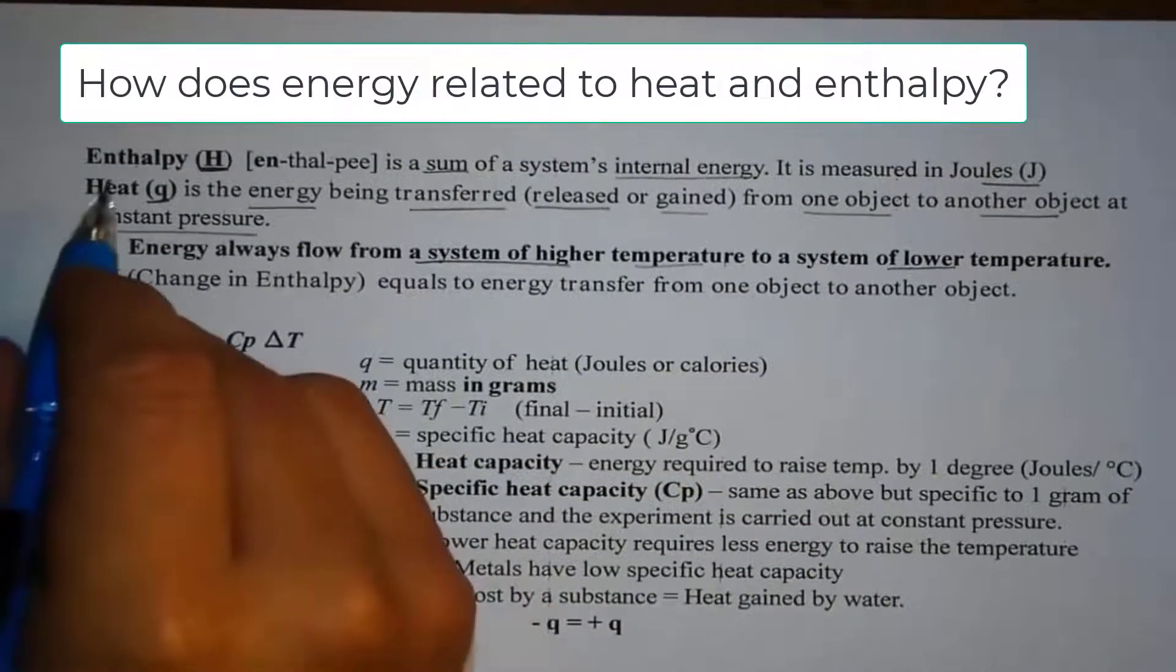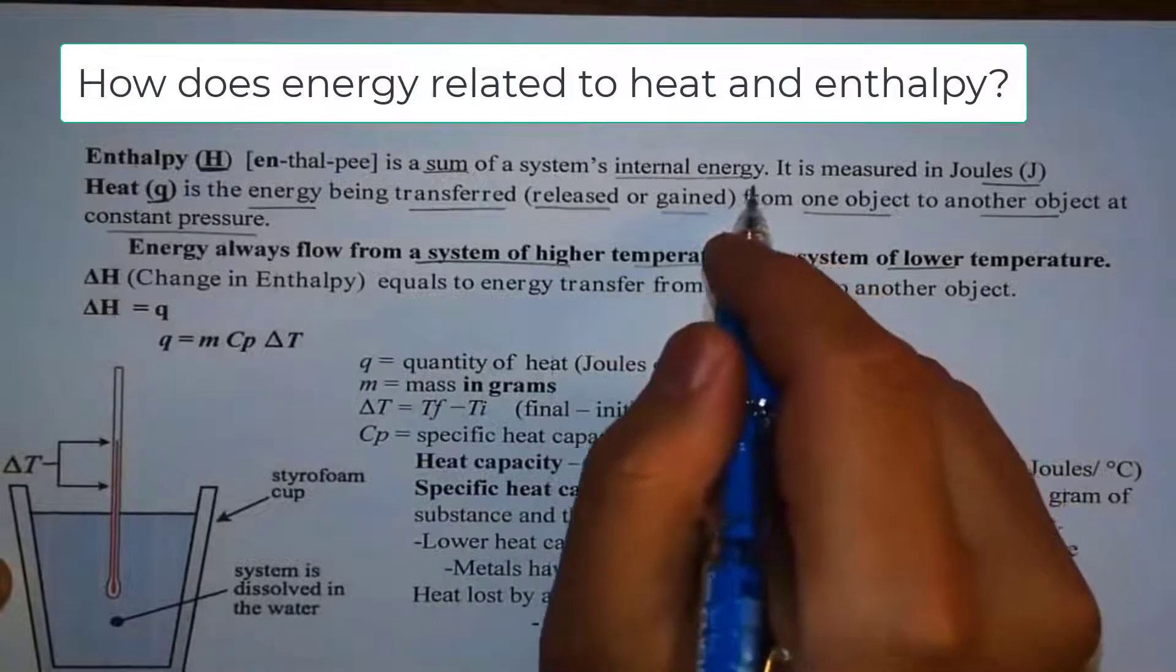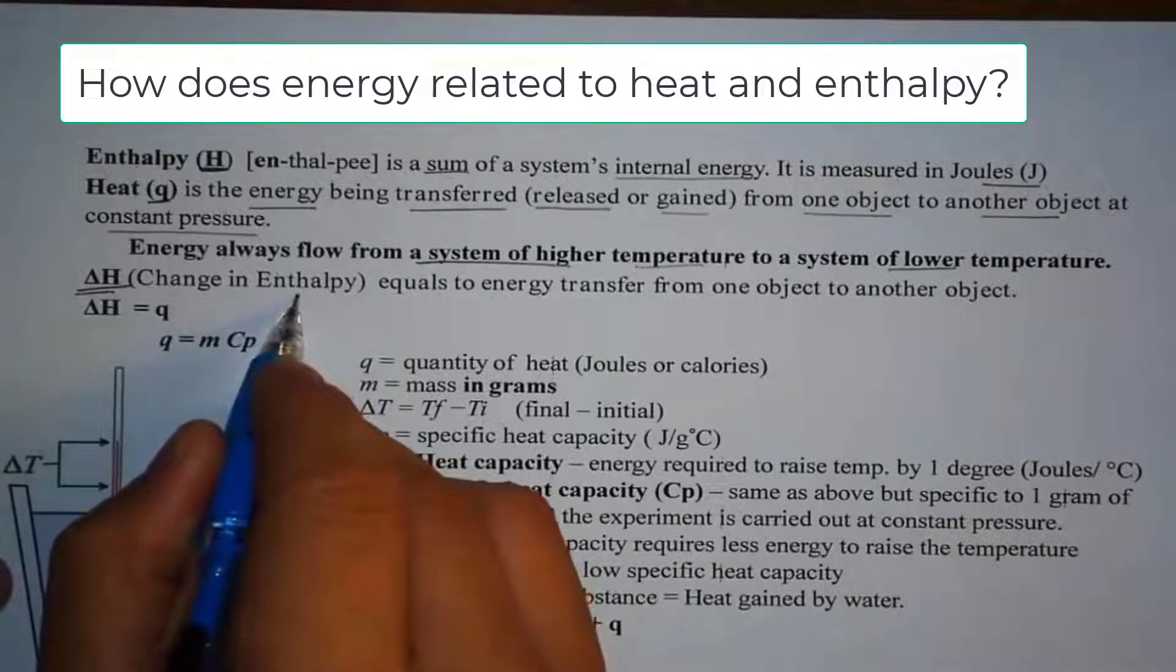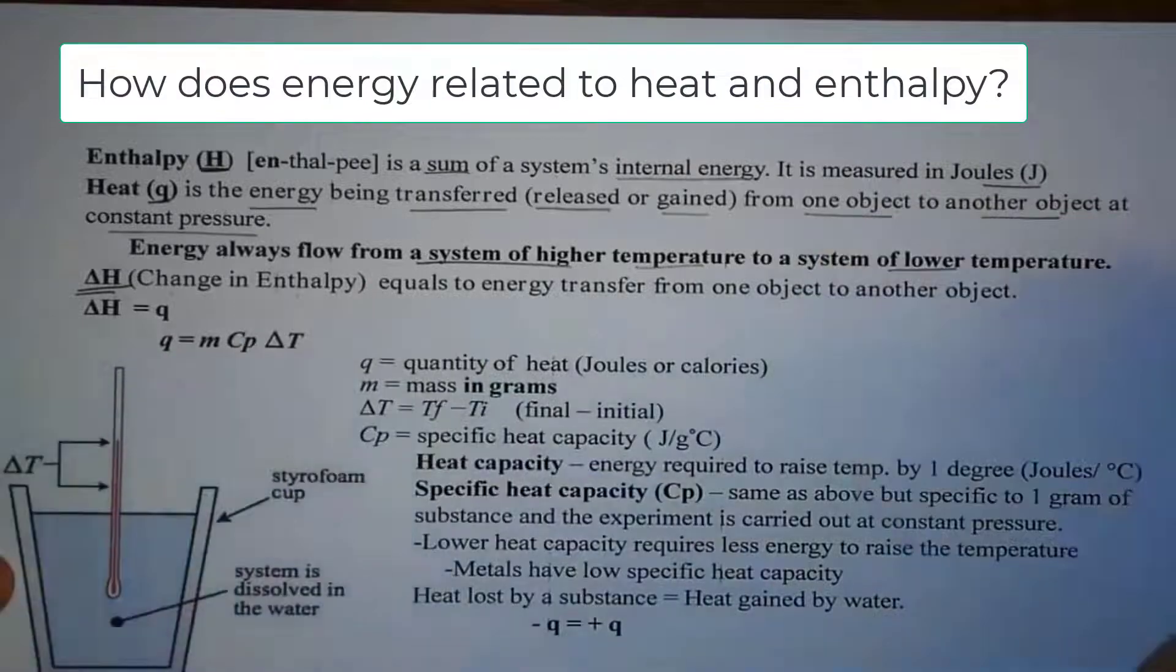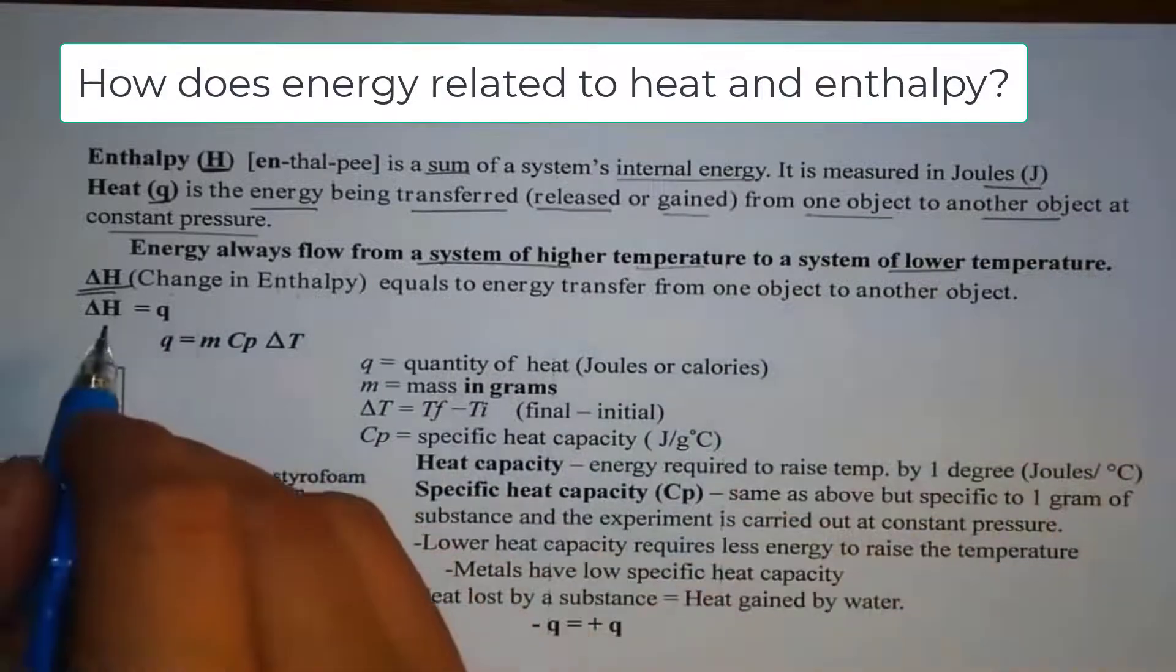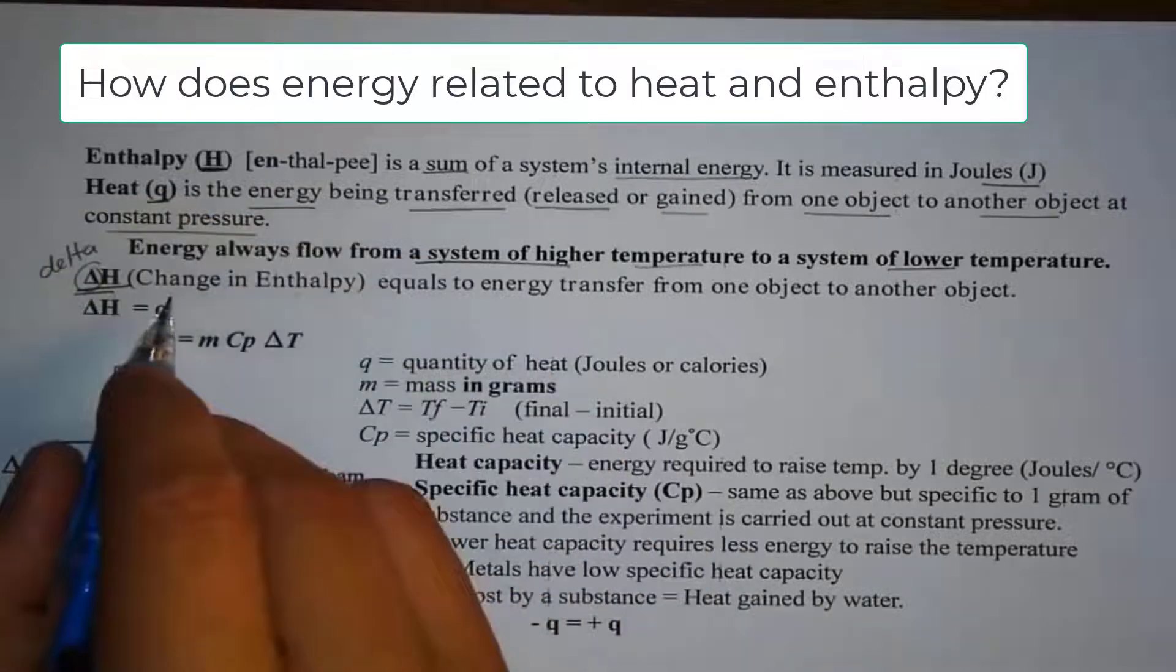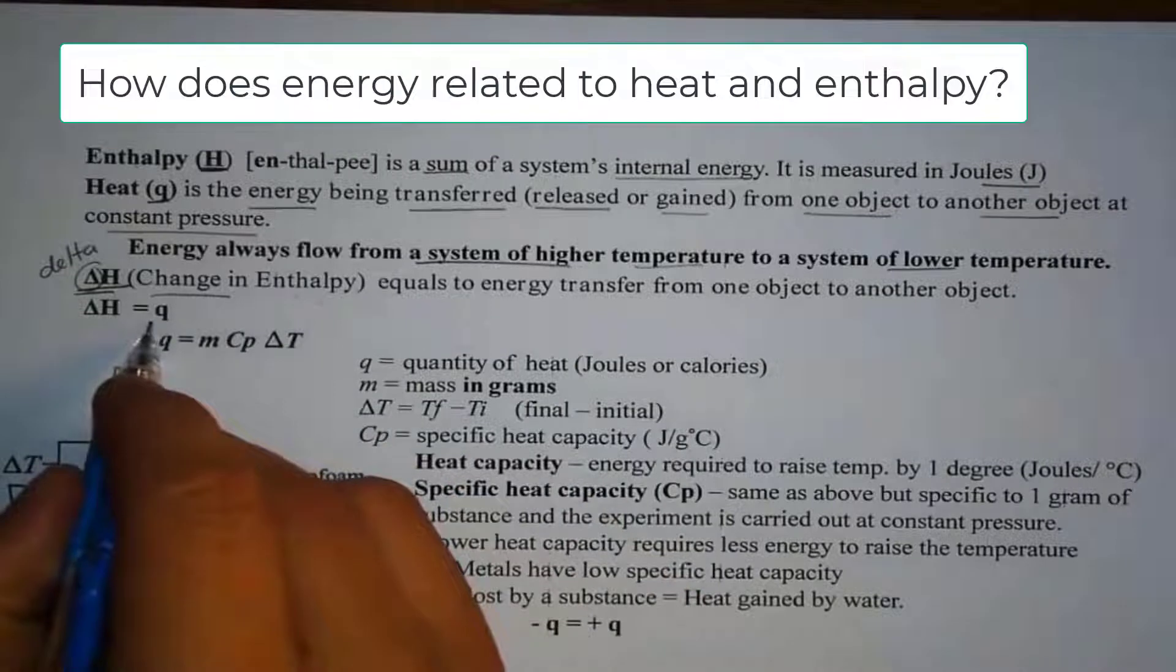Now, notice how we say enthalpy is the sum of internal energy. But what happens if the internal energy changes? We have delta H. We call it change in enthalpy. So in a way, isn't this the energy being transferred? Either releasing or gained? And that's the reason why we have delta. This is the symbol for delta here. And delta usually represents change.